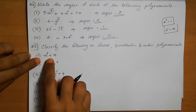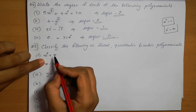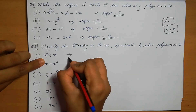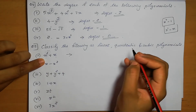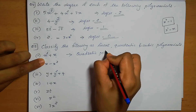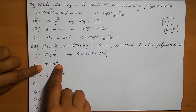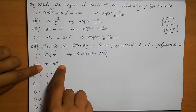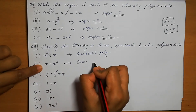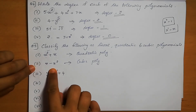Question 1: x squared plus x. The highest degree is 2, so this is a quadratic polynomial. Question 2: x minus x cubed. The highest power is 3, so this is a cubic polynomial. Therefore, x minus x cubed is a cubic polynomial because the degree is 3.